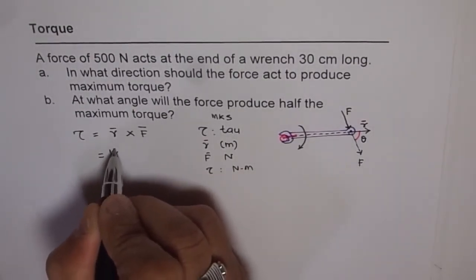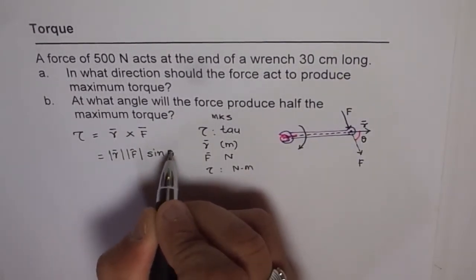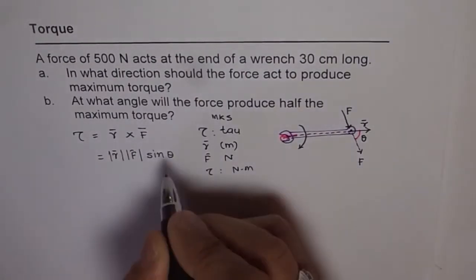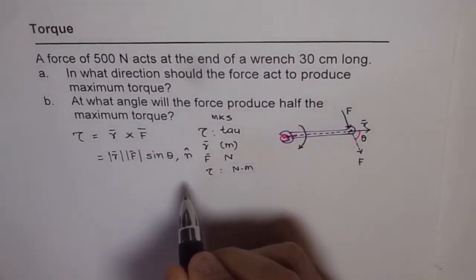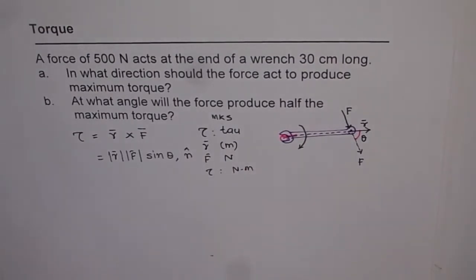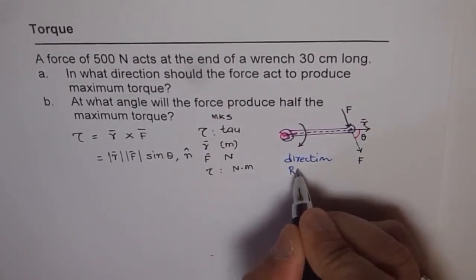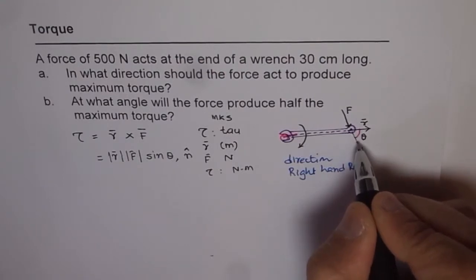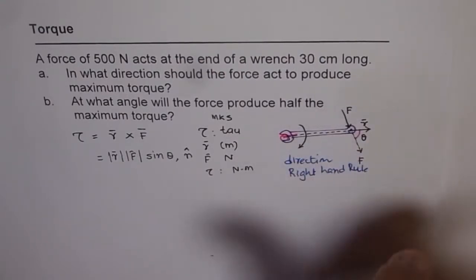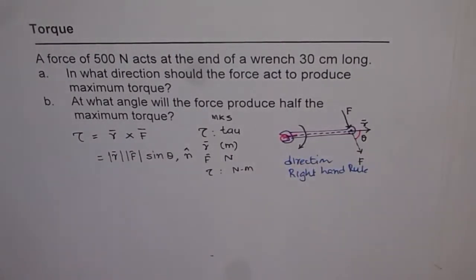Now we can write this as magnitude of r times magnitude of f times sine theta. That becomes the magnitude of torque. It will act in a direction which is normal to the page. This direction is given by right-hand rule. As you move from r to f, you have to put fingers moving from r to f, and thumb is going to point towards the direction in which it moves. So it is a vector.